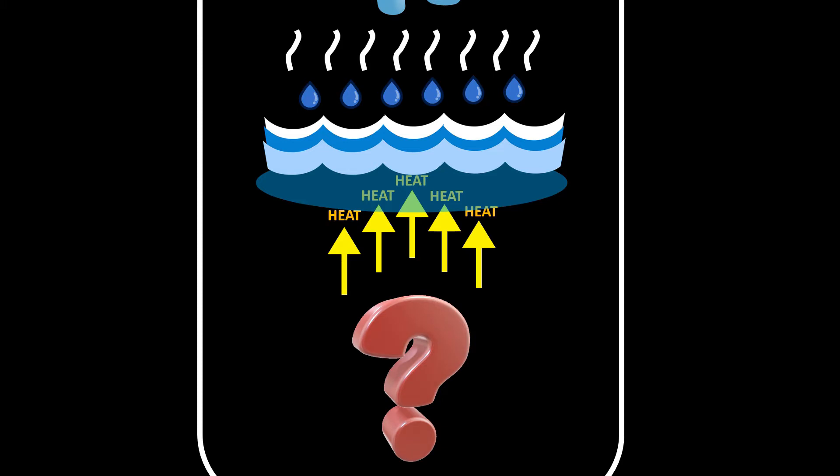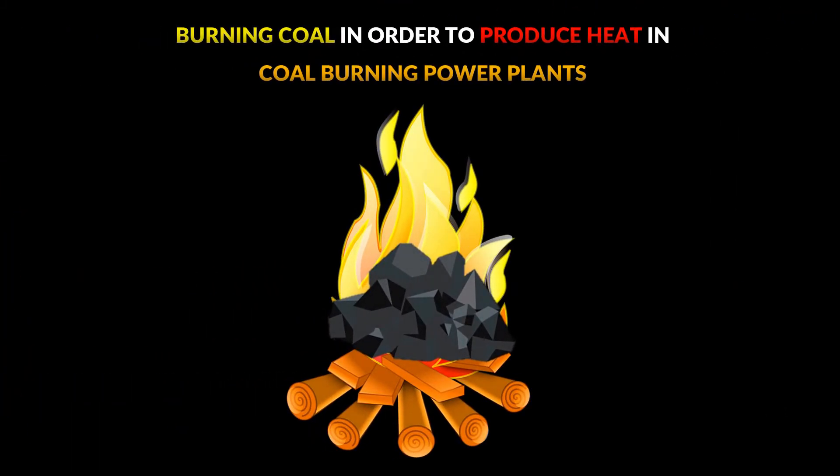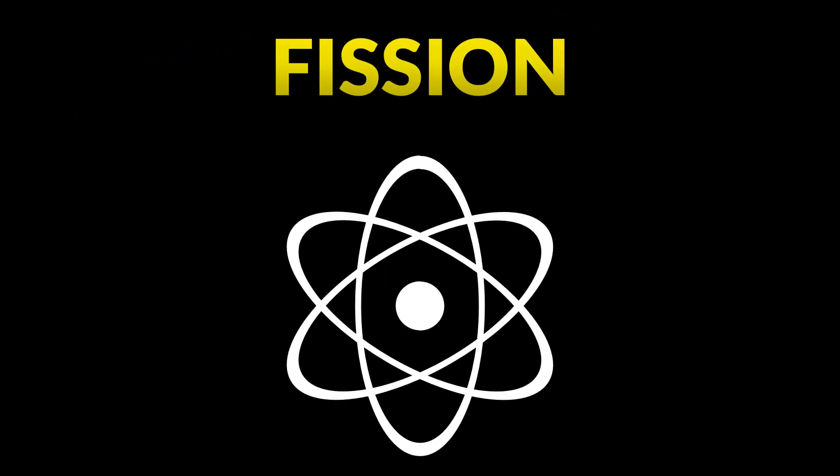We burn coal in order to produce heat in coal burning power plants. But to produce heat in nuclear power plants, a process called fission takes place.